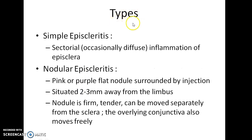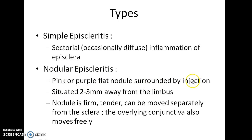What are the types of Episcleritis? There are two types: simple Episcleritis and nodular Episcleritis. Simple Episcleritis is a sectorial inflammation of the Episclera and can occasionally be diffuse. In nodular Episcleritis, a pink or purple flat nodule is seen surrounded by injection, and usually the nodule is situated 2-3 mm away from the limbus.